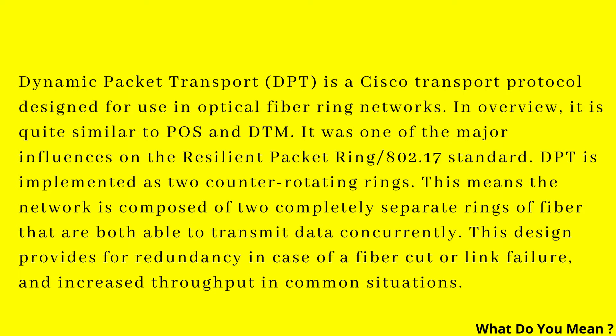DPT is implemented as two counter-rotating rings. This means the network is composed of two completely separate rings of fiber that are both able to transmit data concurrently. This design provides for redundancy in case of a fiber cut or link failure, and increased throughput in common situations.